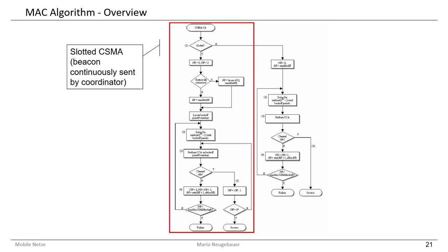The overall algorithm starts with information from the beacon package — for example, whether it is slotted — and this decides whether we enter the contention algorithm. This information is sent with the beacon package from the coordinator to the surrounding reduced function devices. If there is no slotted mode, the reduced function devices go into their slot and transfer their messages according to their assigned slot. Here we want to talk about the contention, so we follow all the steps below.